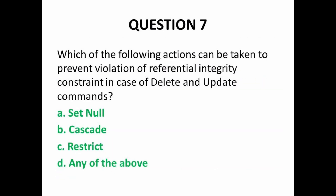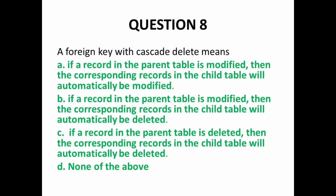Next MCQ: which actions can be taken to prevent violation of referential integrity constraint in case of DELETE and UPDATE commands? If we delete or update primary key values in the parent table that are being referenced by the child table, it will violate referential integrity. To prevent this, we can use SET NULL, CASCADE, or RESTRICT depending on user requirements. So option D — any of the above — is correct.